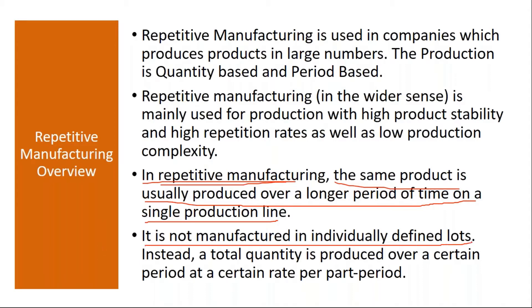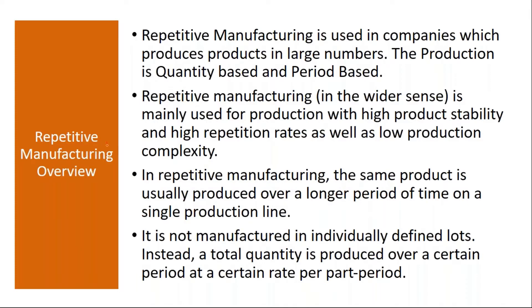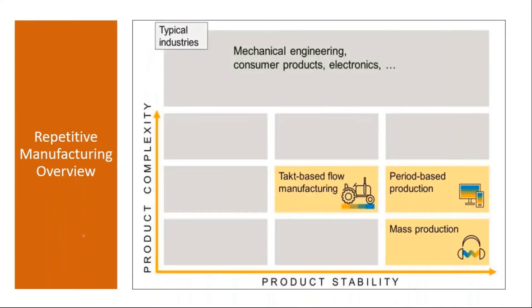It is not manufactured in individually defined lots. Instead, a total quantity is produced over a certain period at a certain rate per part period. You continuously produce a quantity over a period of time. Typically, mechanical engineering industries, consumer industries, or electronics industries will implement repetitive manufacturing. It is period-based production and mass production.